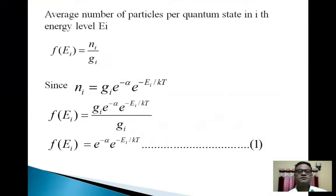Students, average number of particles per quantum state in ith energy level Ei. It is given by f(Ei) = Ni/gi.